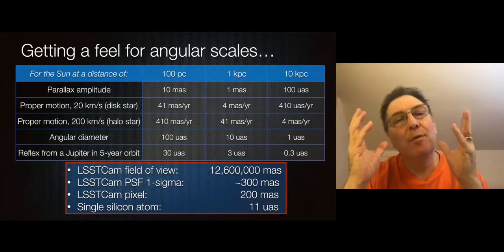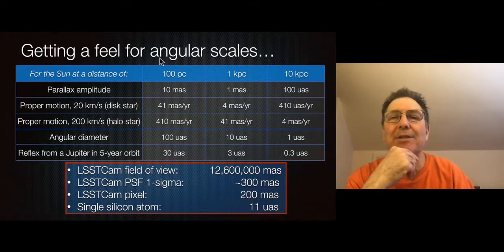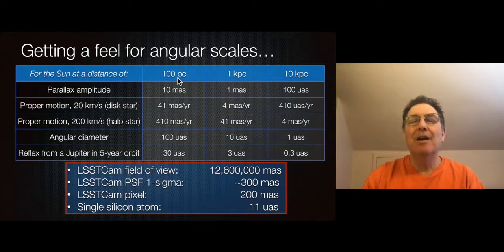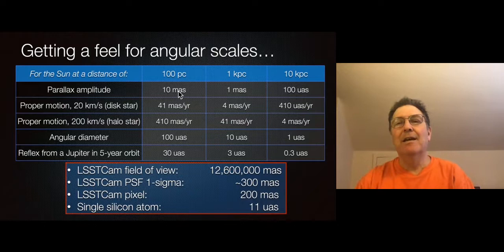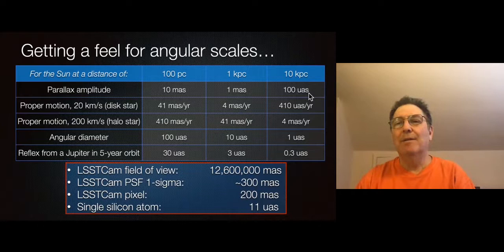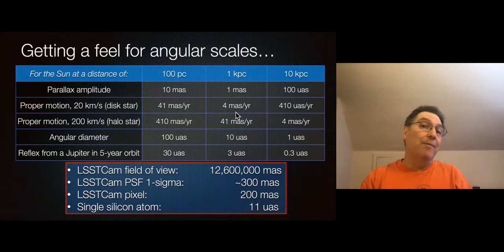Let's dive into astrometry and get a feel for what kinds of angles are interesting. Suppose you want to measure the distance to a star 100 parsecs away using parallax — its annual wobble will be an ellipse with a semi-major axis of 10 milli-arcseconds. At 1 or 10 times farther, that drops to 1 milli-arcsecond or 100 micro-arcseconds. For disk stars, parallaxes are in the milli-arcsecond regime.